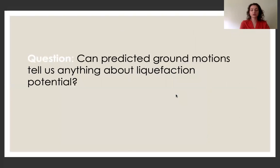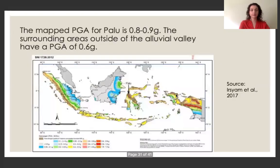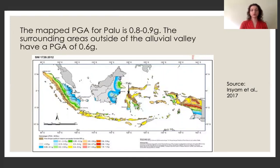So an interesting question is that if we knew this type of relationship exists between magnitude and liquefaction, let's take a step further and think about whether predicted ground motions can tell us anything about liquefaction potential. So as you may know, there were no seismic stations during the Palu earthquake, and we did not have any ground motion data.